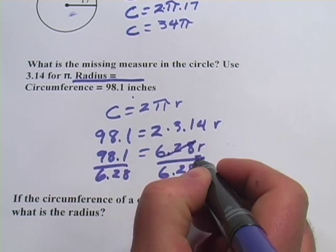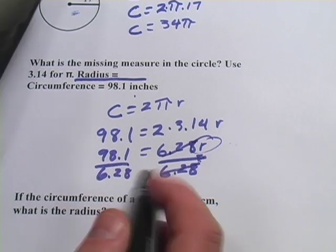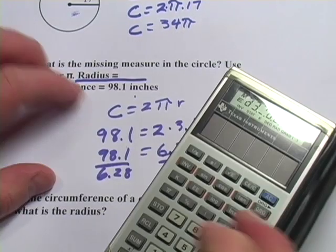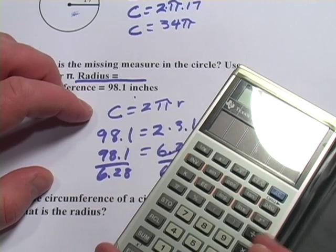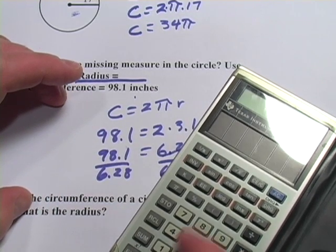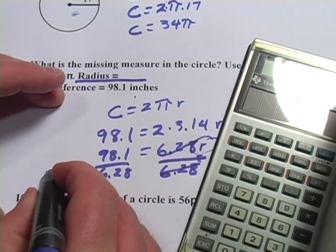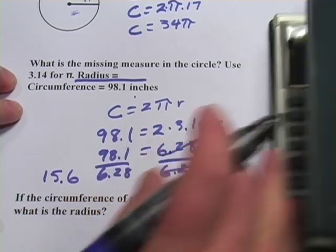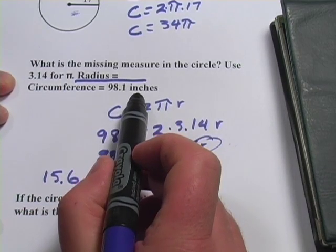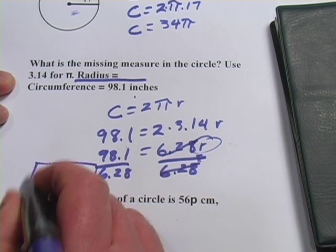When we divide over here, these two cancel out, leaving just r by itself, which is what we want, and our answer is going to be over here. But I think I'm going to do this on my calculator. We have 98.1 divided by 6.28, and I get a radius of 15.6 approximately. And it said the circumference was in inches, so we're going to use the same units here for the radius.